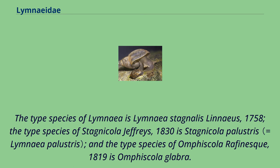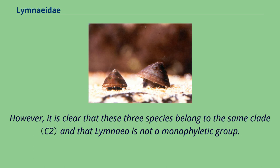The type species of Limeidae is Limeidae stagnolus Lineus, 1758. The type species of Stagnicola Jeffries, 1830 is Stagnicola pelustris, and the type species of Omfiscola Ruffinesque, 1819 is Omfiscola glabra. However, it is clear that these three species belong to the same clade and that Limeidae is not a monophyletic group.